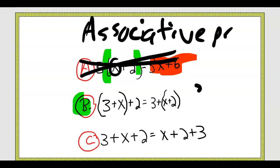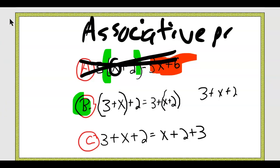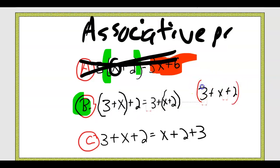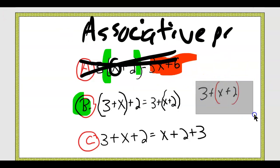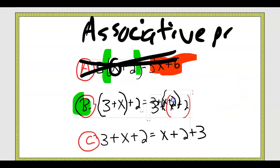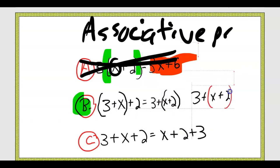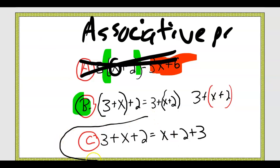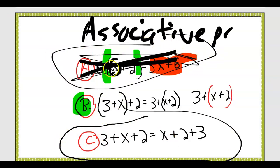We'll do 3 plus x plus 2. Instead of 3 hanging out with x, let's have x hang out with 2. I'm not moving any of the terms — I'm just moving the parentheses. And wouldn't you know it, they're the same — they're equivalent. Down here is also true, but that's not the associative property. And C — can you remember what that's called? They just switched: 3 moved to the end, x moved to the front, 2 moved to the middle. They changed places — that's commutative property.